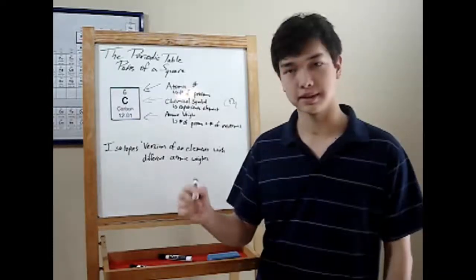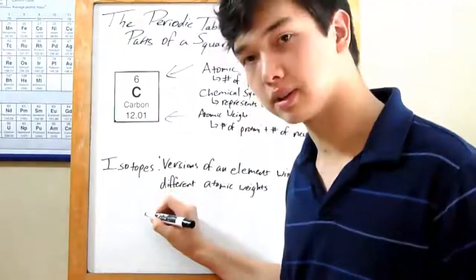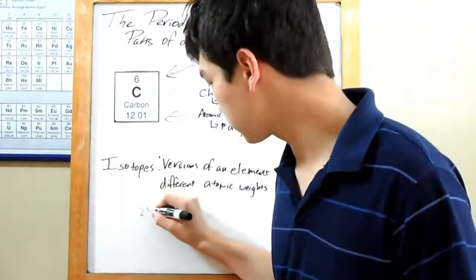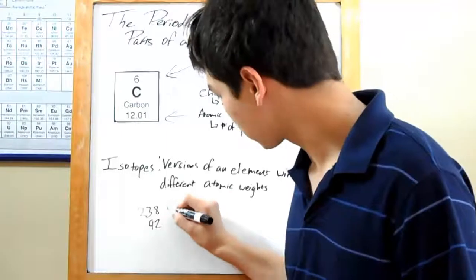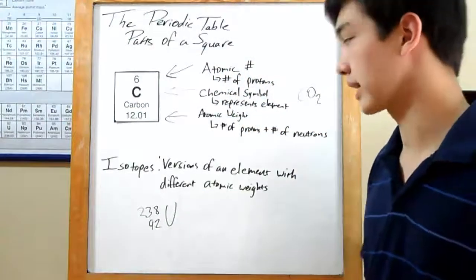Now, let's move on to an example. We're going to take something from nuclear chemistry, which, although it's pretty advanced, is actually pretty easy with the information we just learned. So let's take uranium.